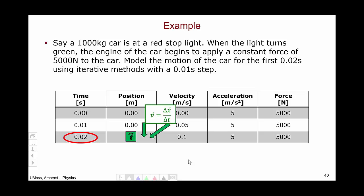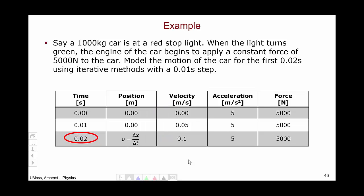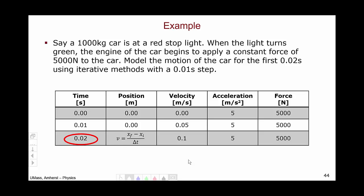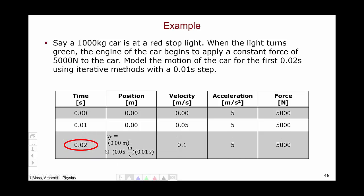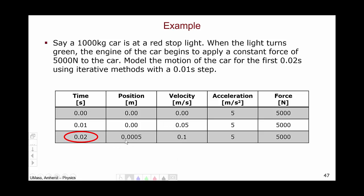Finally, we move on to position. Using the fundamental definition of velocity, we expand the delta and rearrange algebraically. We're going from 0.01 to 0.02, so our initial position is 0 meters, our velocity is 0.05 meters per second, and our delta t is 0.01 seconds. Substituting in these values, we get a final position of 0.0005 meters.